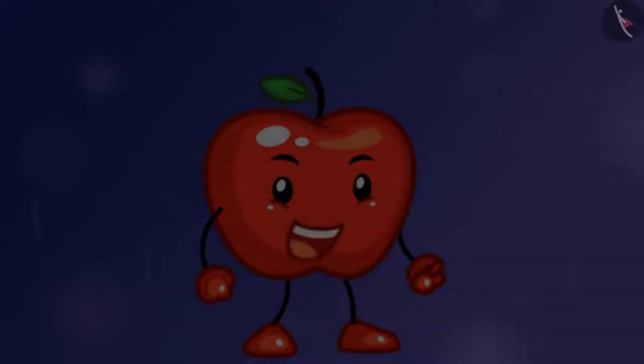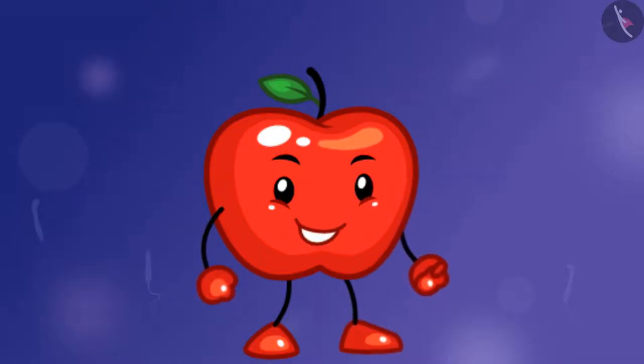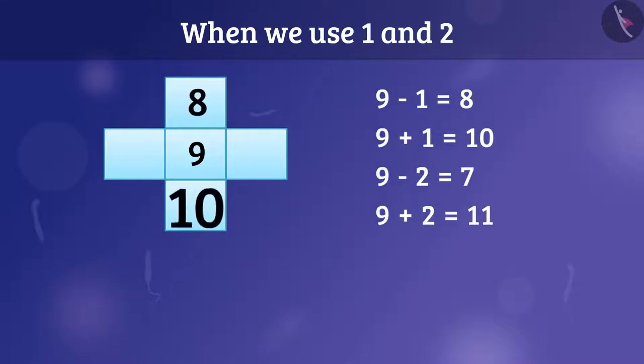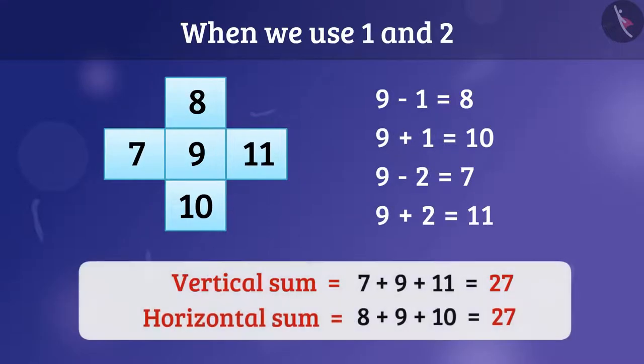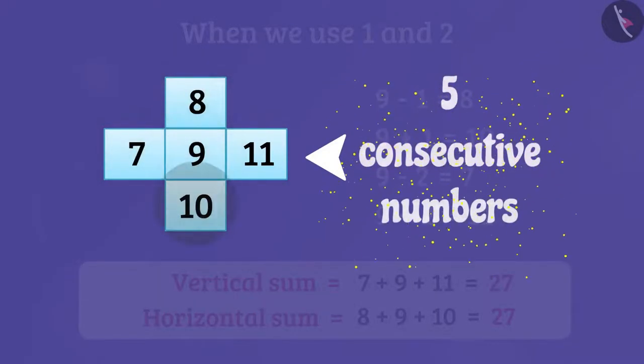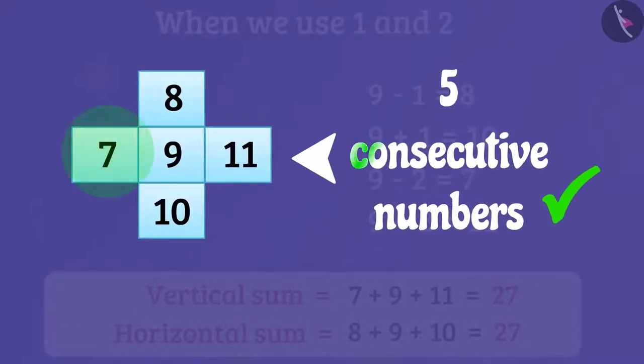Appy says, yes, you are right. And Fruity, see, when we use 1 and 2 for doing addition and subtraction, we get a nice arrangement of 5 consecutive numbers. That means we can use 5 consecutive numbers to solve a third order cross puzzle.